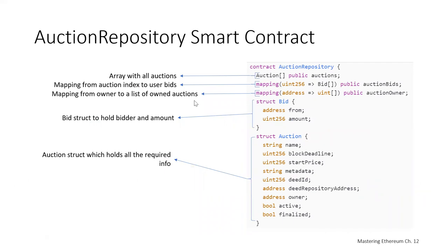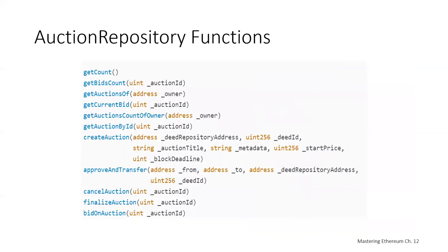The auction repository smart contract is what actually runs the auction. It has an array of various auctions, a mapping from auction index to user bids, and a mapping from auction owner to a list of owned auctions. There's a data structure to hold the bidder and amount, and an auction data structure holding required info such as name, block deeds, metadata, deed IDs, owners, and so on. Functions include get count, get bids count, get auctions of, get current bid, get auctions count of owner, auction by ID, create auction, approve and transfer, cancel auction, finalize auction, and more.